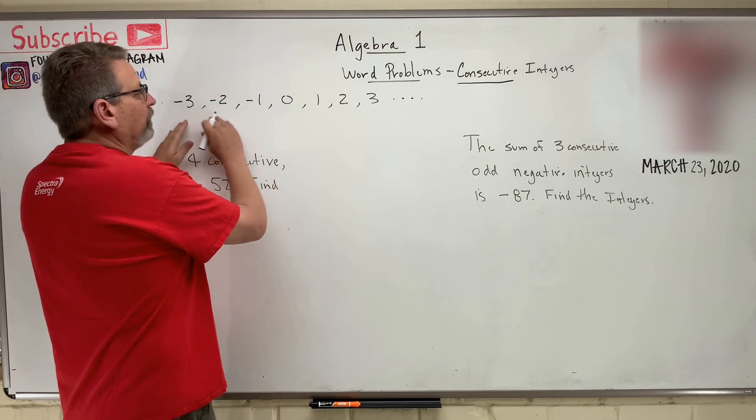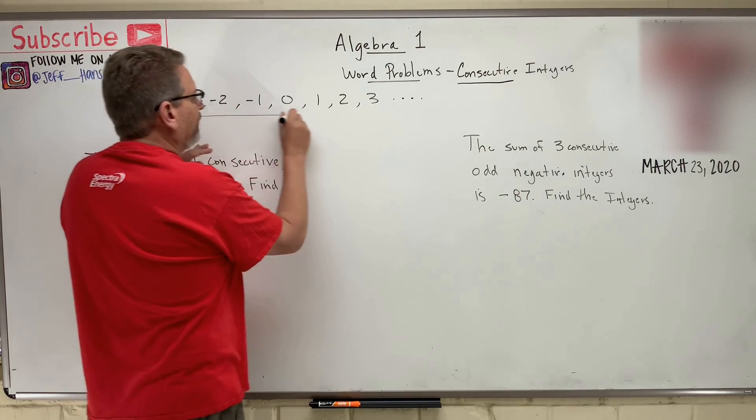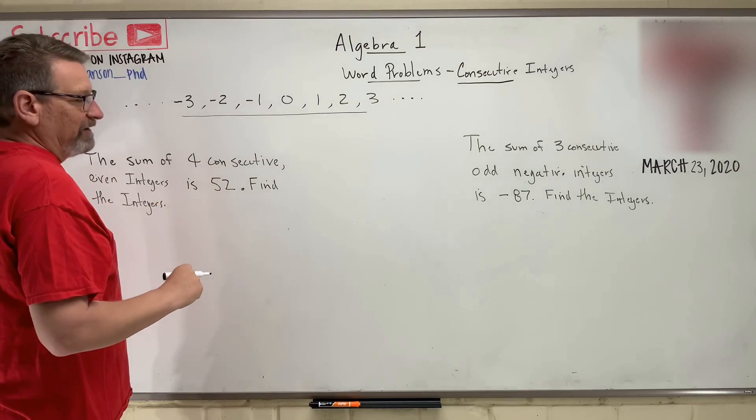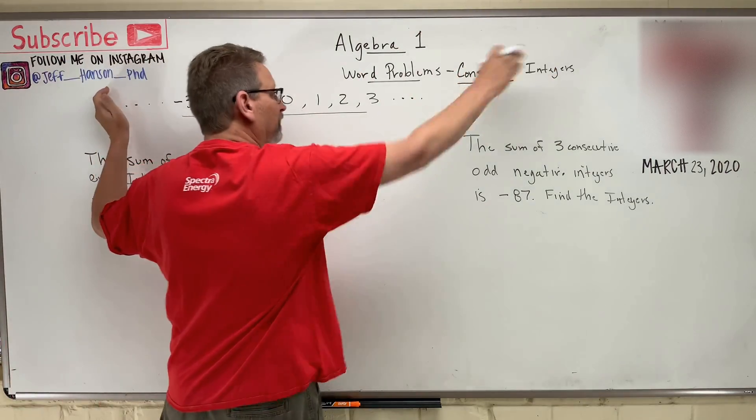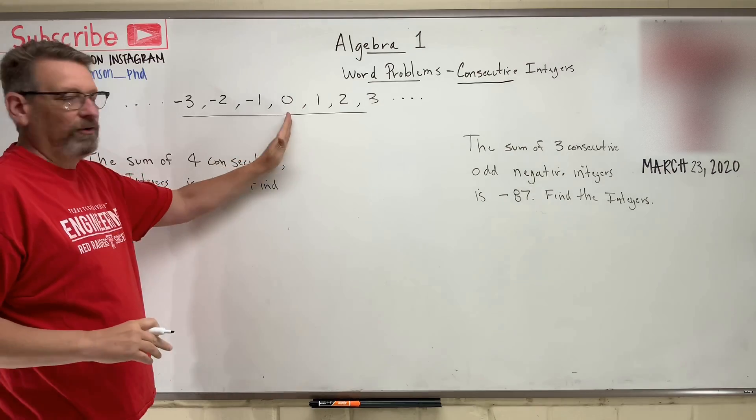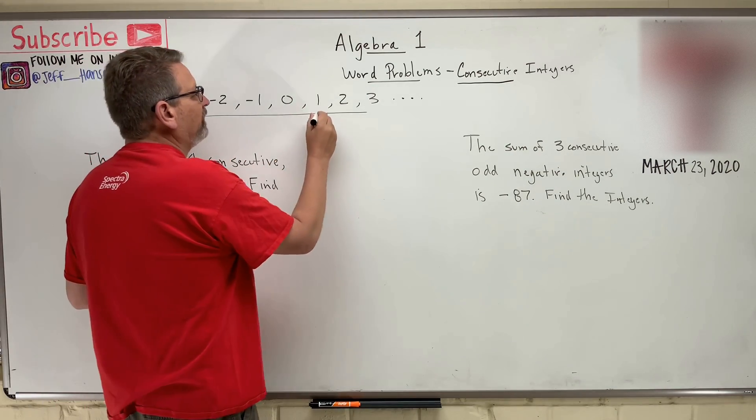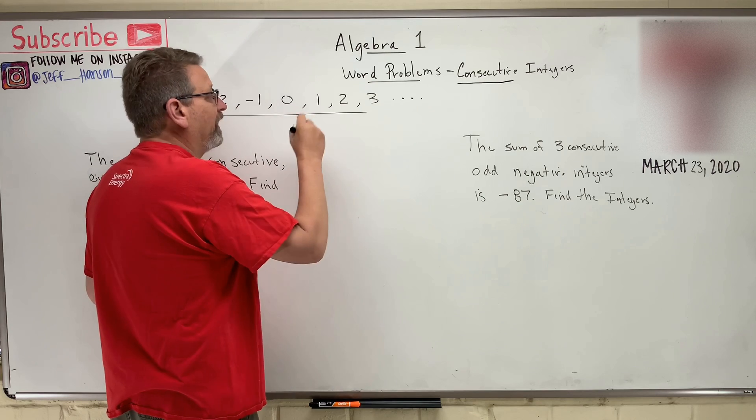So on our number line, remember this is our number line. Our number line goes from negative infinity to positive infinity with a zero right in the middle. So consecutive integers means that they're in order. They're one after the other.